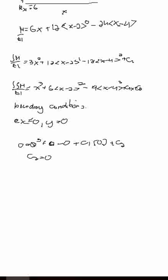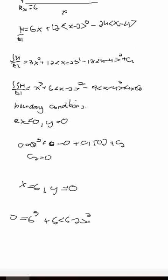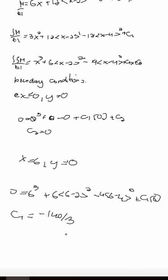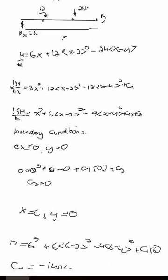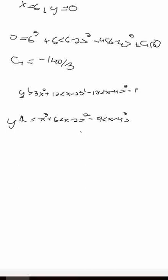Applying the second boundary condition: at X equals 6, Y equals 0. Substituting: 0 equals 6 cubed plus 6 times (6 minus 2) squared minus 4 times (6 minus 4) cubed plus C1 times 6. Solving this equation gives C1 equals negative 140 over 3. We can now substitute these constants back into our slope and deflection equations.